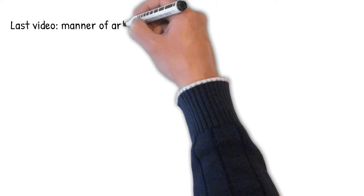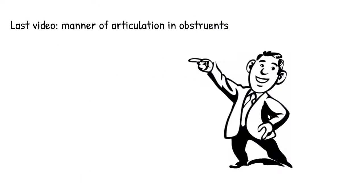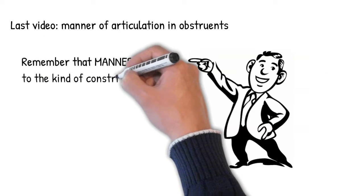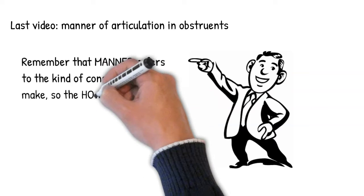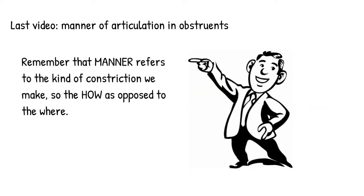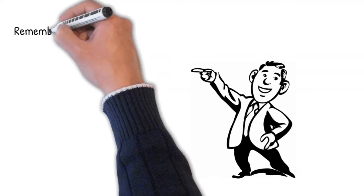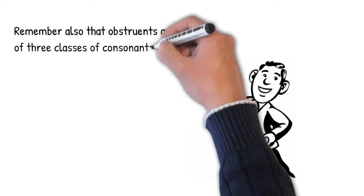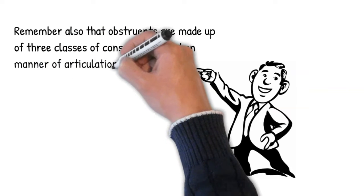In our last video, we talked about manner of articulation in obstruents. Remember, the term manner refers to the kind of constriction that we make when we make a consonant sound. And for the purposes of reviewing where we've been, let's also remember that the obstruent sounds are made up of three kinds of manners of articulation.